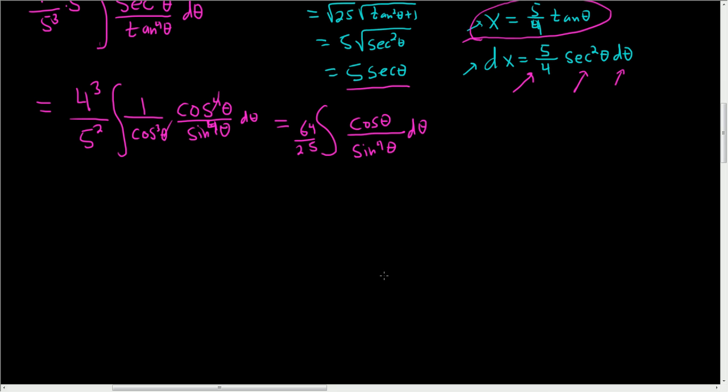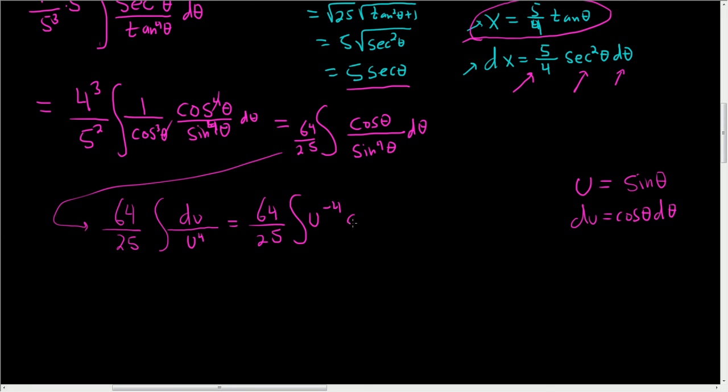So now we can make another substitution. We can let u equal sine of theta. And then du is equal to cosine theta dtheta. So our integral becomes 64 over 25. And then we have simply du over u to the fourth. And so this is equal to 64 over 25. The integral of u to the negative fourth du.